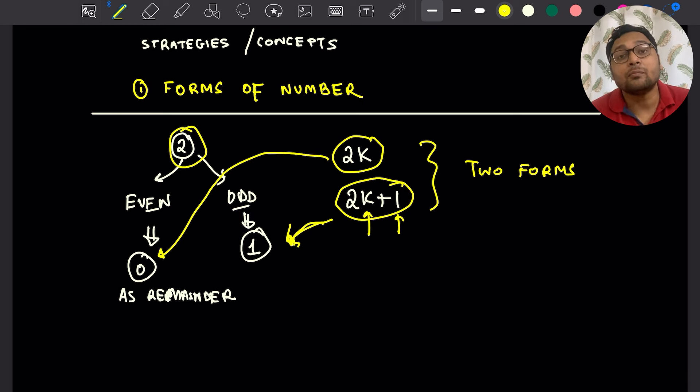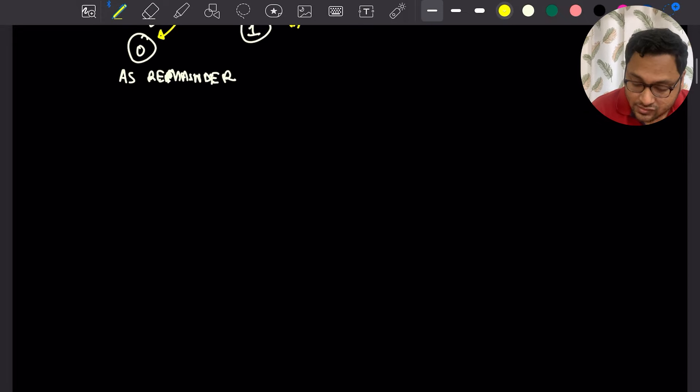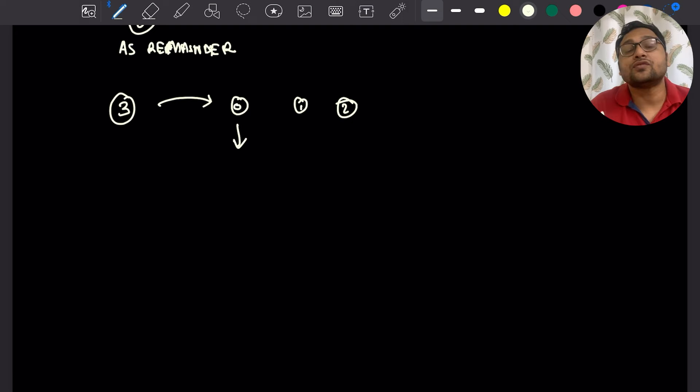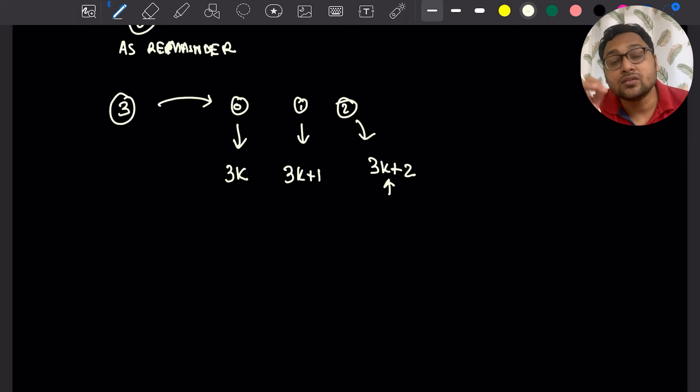The same thing can be done with the number 3. If you divide any number by 3, the remainders are 0, 1, 2. The numbers with remainder 0 when divided by 3 is just 3k. Numbers with remainder 1 when divided by 3 is 3k plus 1. And numbers with remainder 2 when divided by 3 is 3k plus 2. k is the quotient, 2 is the remainder.